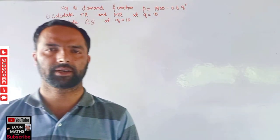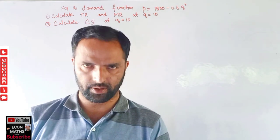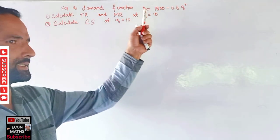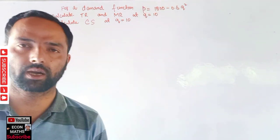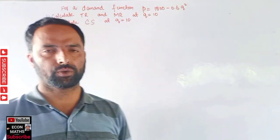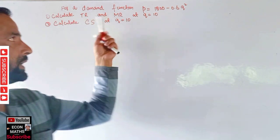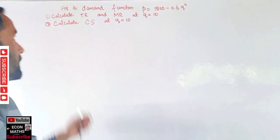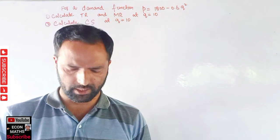Hi, this is Halal. In this video on mathematical economics series, we will solve a problem asked by a friend on YouTube. The question is: for a demand function given as p = 1800 - 0.6q², we are given an inverse demand function where p is the price and q is the quantity. We are told to calculate the total revenue and marginal revenue when quantity equals 10, and also calculate the consumer surplus at q = 10.